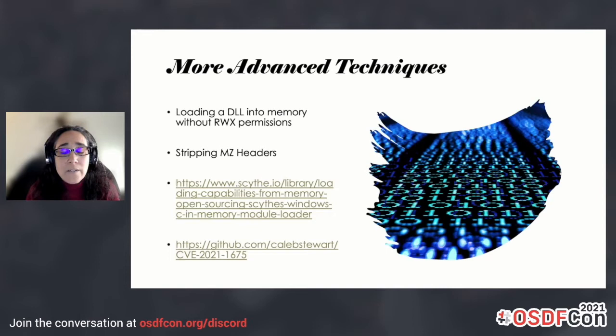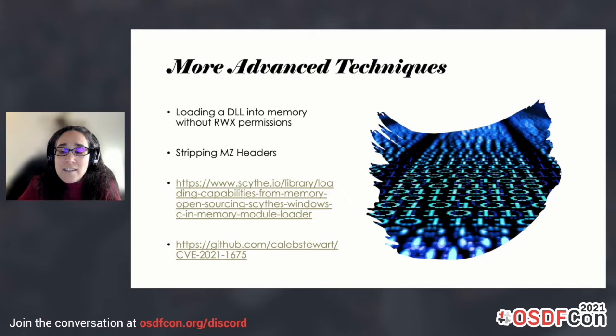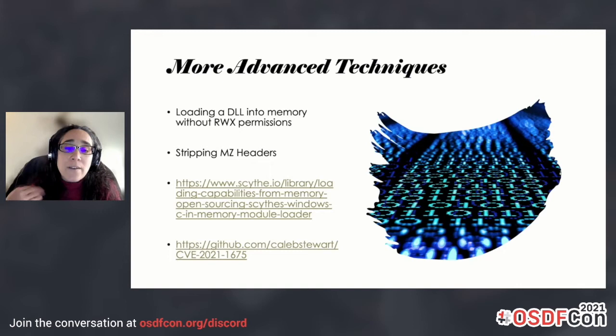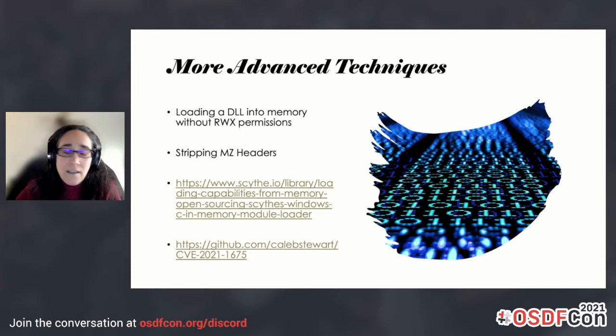There's also another example I wanted to go over, which is a PowerShell implementation of Print Nightmare. Print Nightmare was the big debacle that happened earlier this year, where the print spooler was exploited and would allow things like adding users to the system. There is a PowerShell implementation written by Caleb Stewart and John Hammond, brilliant coworkers of mine at Huntress. I decided to take a look at that implementation and see how it plays out within memory.